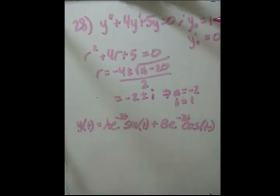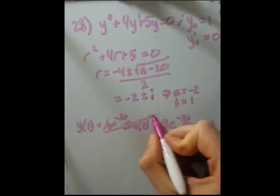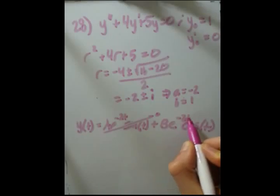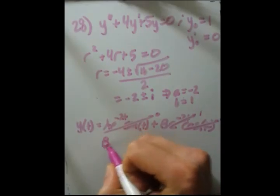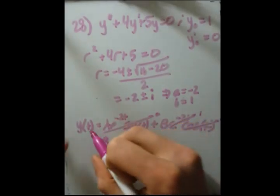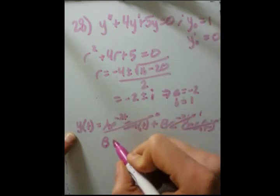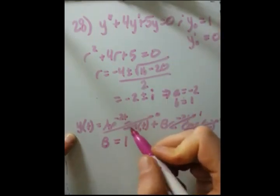So let's look at our initial condition here. y of 0 is 1. So if we plug in 0 for t, the sine makes this whole term go away. And in here, e to the 0 is just 1. Cosine of 0 is 1. So we end up with b times 1, this term goes away, equals y0. And y0 is 1. So that's pretty straightforward.